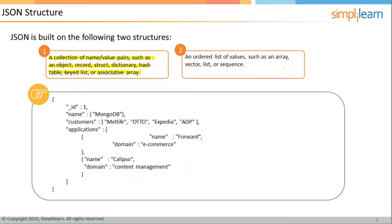Number two, an ordered list of values such as an array, vector, list or a sequence. So that is what a JSON can internally have.